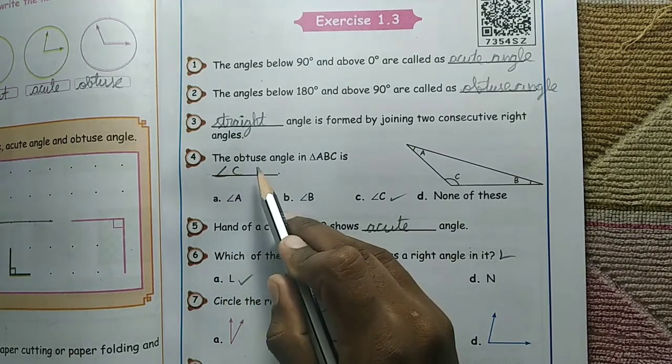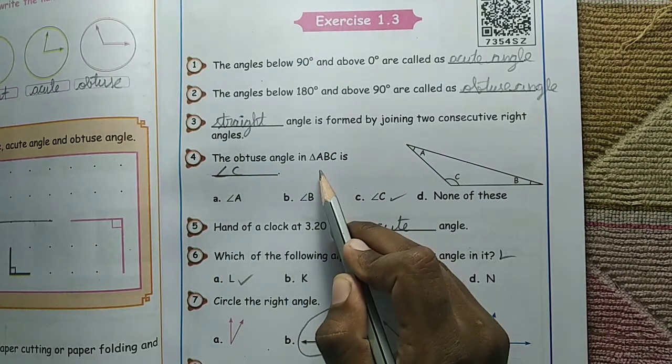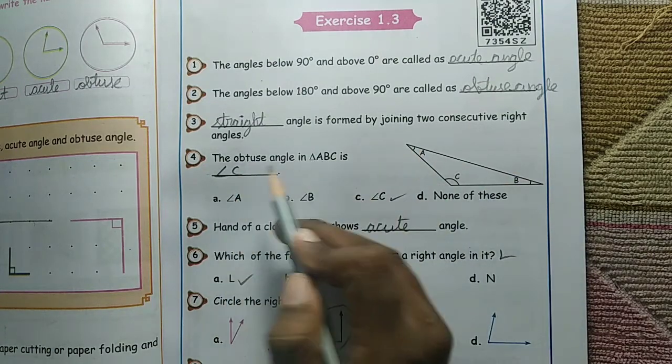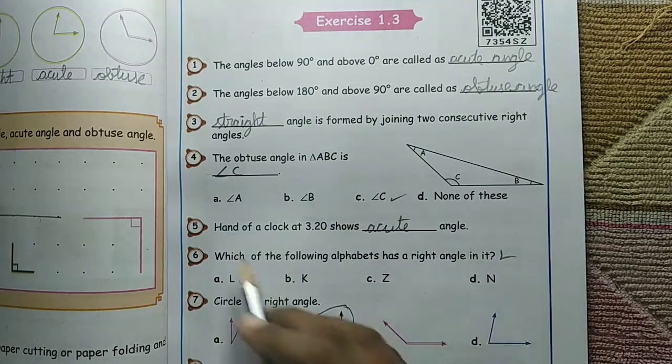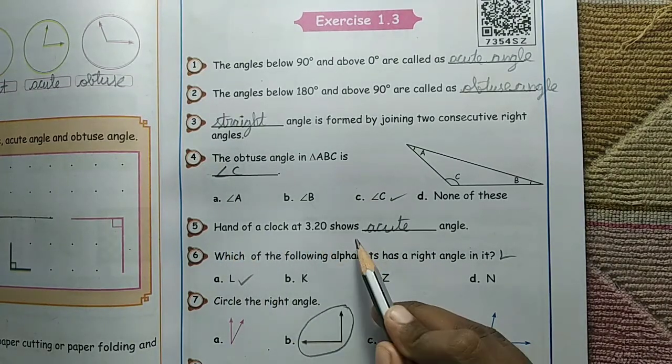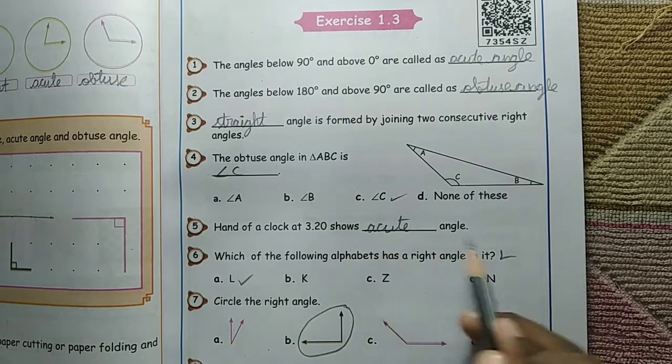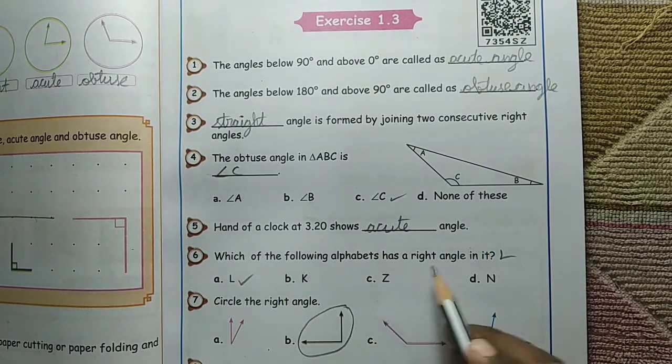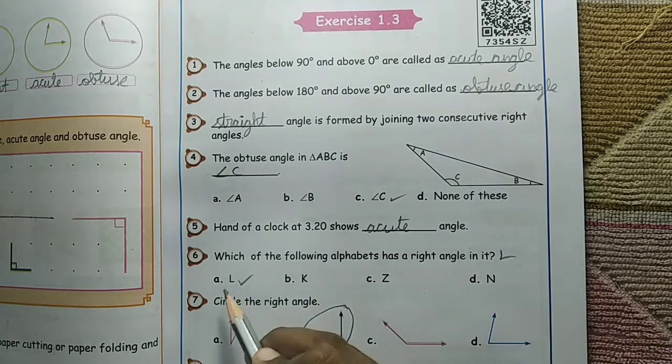The obtuse angle in ABC is angle C. Hand of a clock at 3:20 shows an acute angle. Which of the following alphabets has a right angle in it? L.